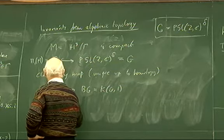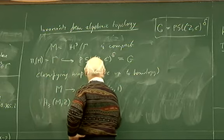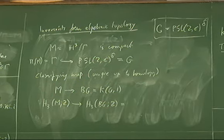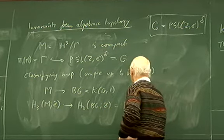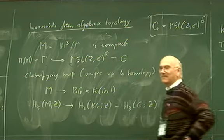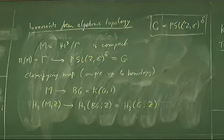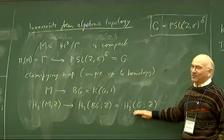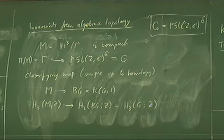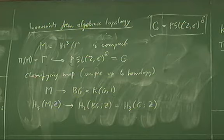Whenever you have a map of the fundamental group of a space to a discrete group, there's a classifying map, unique up to homotopy, from the actual space to the classifying space BG for this discrete group. In the case of a discrete group, BG is the same thing as an Eilenberg–MacLane space K(G,1) — a space whose fundamental group is G and all other homotopy groups are trivial. So we get a map of M to BG.